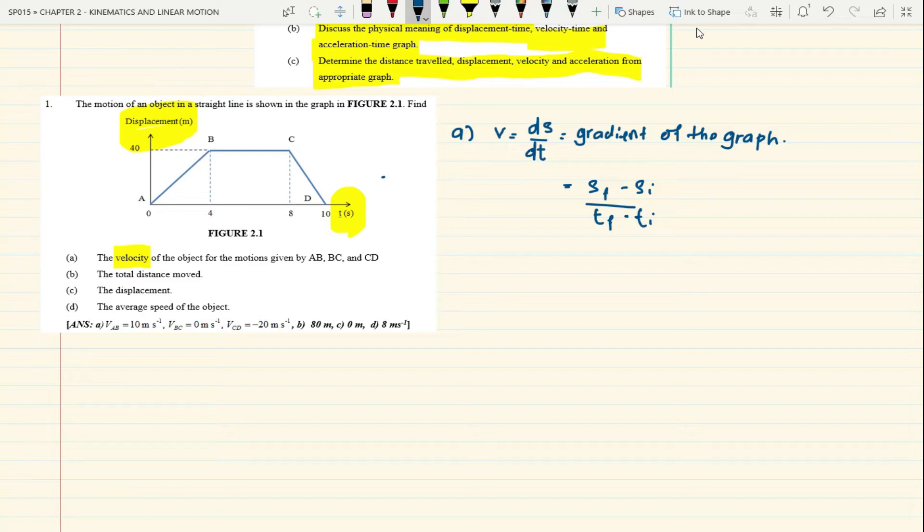If it is AB, that means B is final and A is initial. Substitute into this formula, then you will get the answer for VAB. Then VBC and VCD. Alright, so you should not have any problem with this, just find the gradient of the graph.